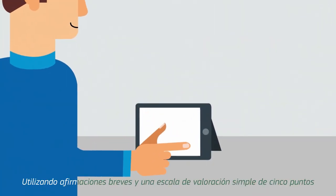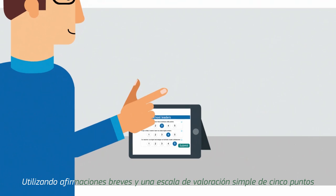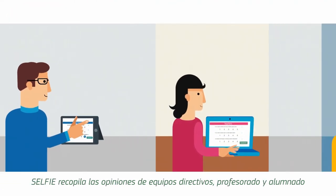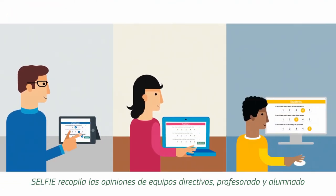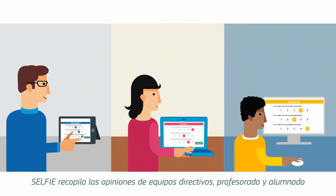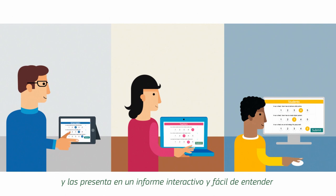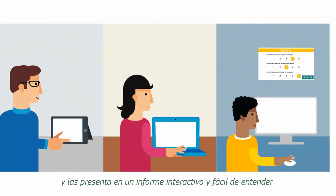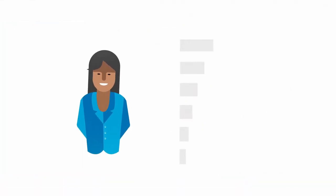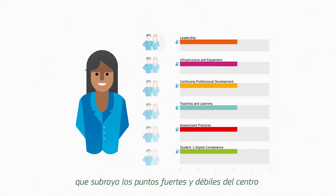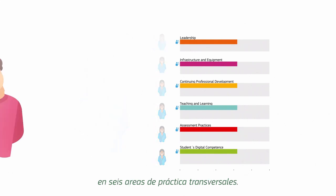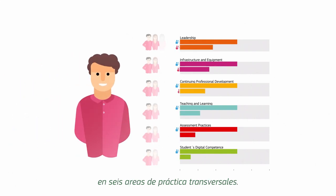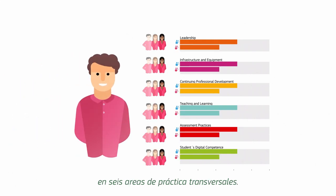Using short statements on a simple five-point scale, Selfie collates the views of school leaders, teachers, and students, and presents these in an easy-to-understand interactive report that highlights strengths and weaknesses in six common practice areas across the school.